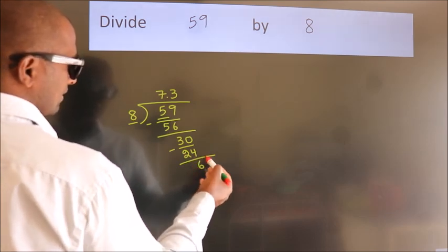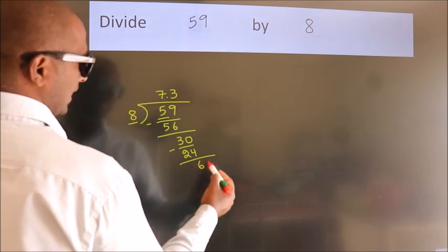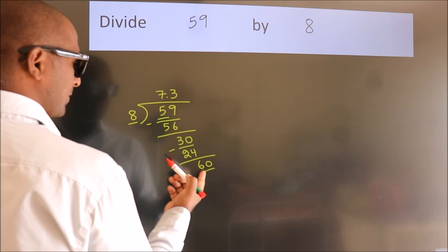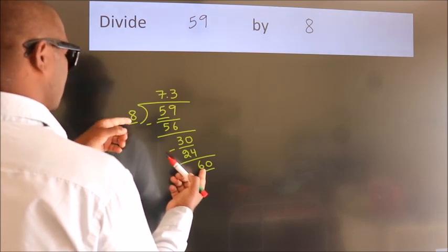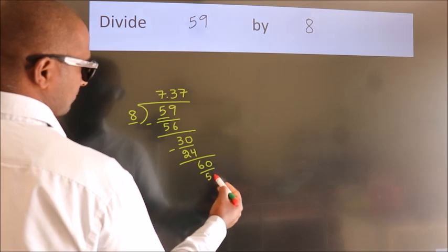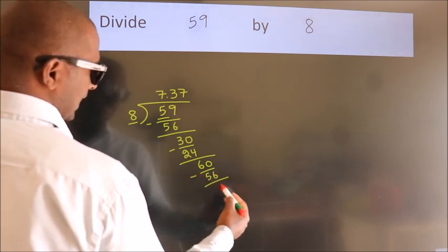After this we already have the decimal, so directly take 0, so 60. A number close to 60 in the 8 table is 8 times 7 equals 56. Now we subtract. We get 4.